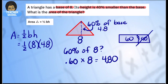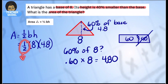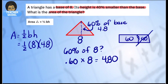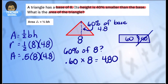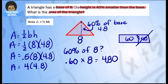For this problem, rather than dealing with four and eight-tenths as a fraction, I'll change one-half to a decimal. Two goes into one — you should get five-tenths (0.5). So we have 0.5 times eight times four and eight-tenths. First: 0.5 times eight is four. Then four times four and eight-tenths gives us our final area. Don't forget your units squared.